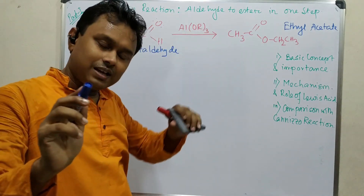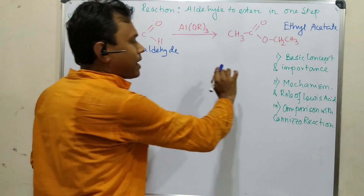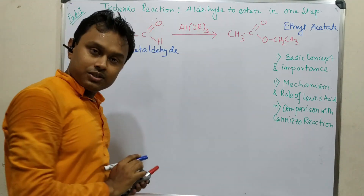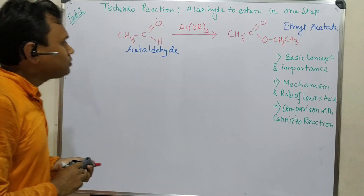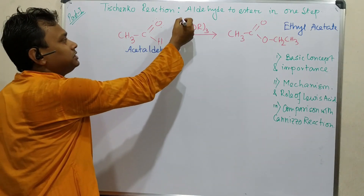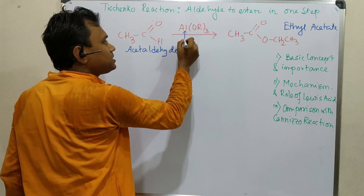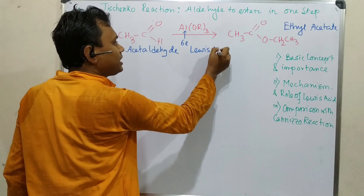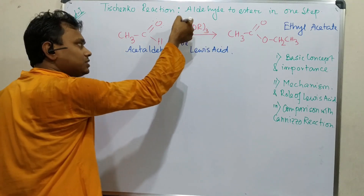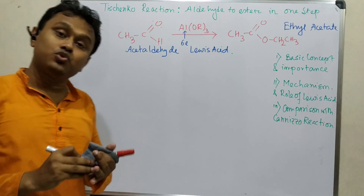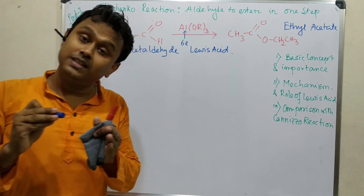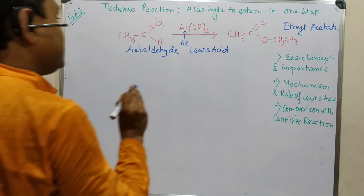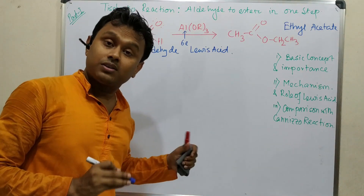Now let's discuss the mechanism. Aluminum is a six-electron species, which is why it acts as a Lewis acid. The three oxygen atoms of the aluminum alkoxide donate electron density to aluminum, which reduces its electron deficiency somewhat — but that does not mean the octet is filled. This electron deficiency is the main driving force for the reaction.